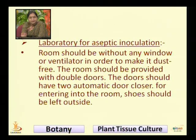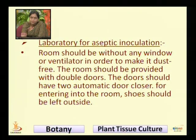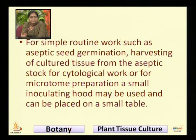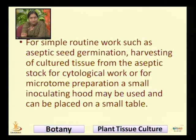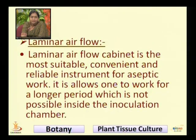The aseptic inoculation room should be without any window or ventilator in order to make it dust-free. The room should have double doors with two automatic door closers. For entering the room, shoes should be left outside. For simple rooting works such as aseptic seed germination, harvesting of culture tissue from aseptic stock, or for cytological work or microtome preparation, a small inoculating hood may be used on a small table.